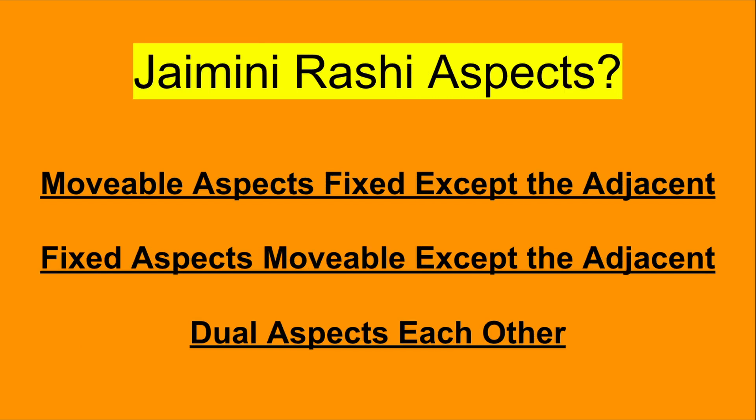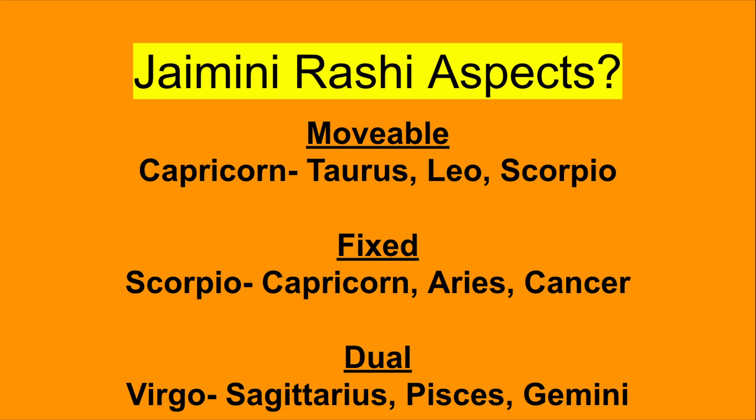For the Rashi aspects — a concept from Jaimini astrology — the movable signs always aspect the fixed signs, except for the sign right next to them. So for example, Aries will aspect all of the fixed signs except for Taurus. Fixed signs do the opposite — they aspect all of the movable signs except for the one right next to them. Dual signs simply aspect one another. For example, Capricorn, a movable sign, will aspect Taurus, Leo, and Scorpio, but will not aspect Aquarius because that sign sits right next to it.